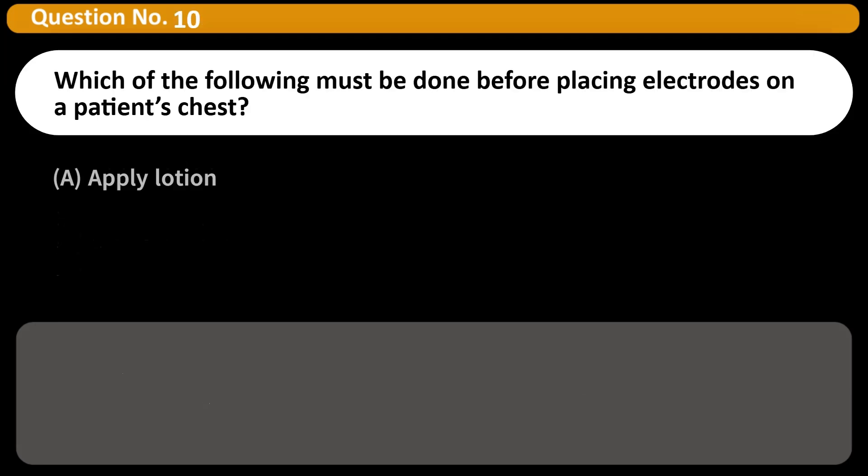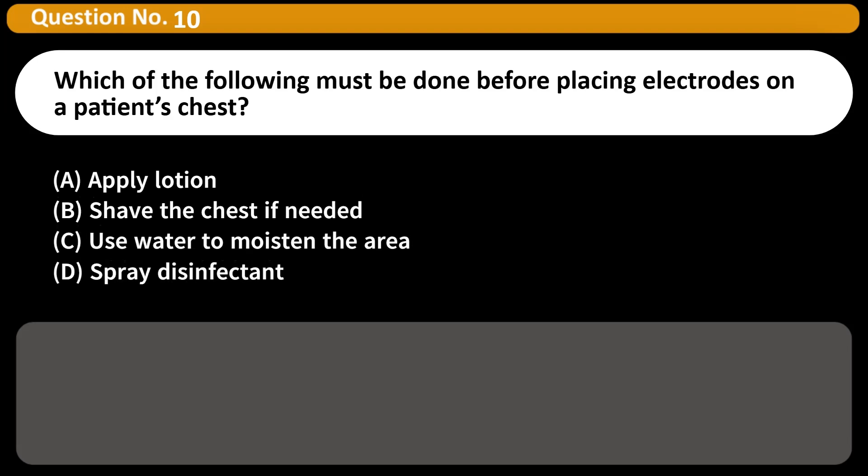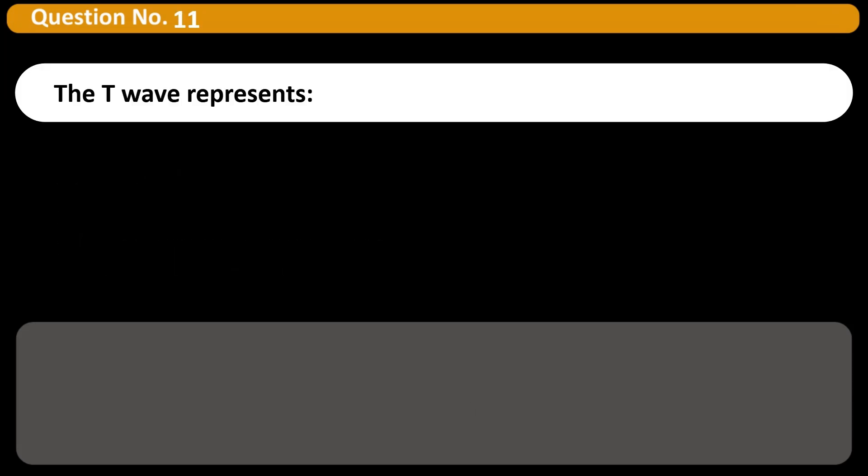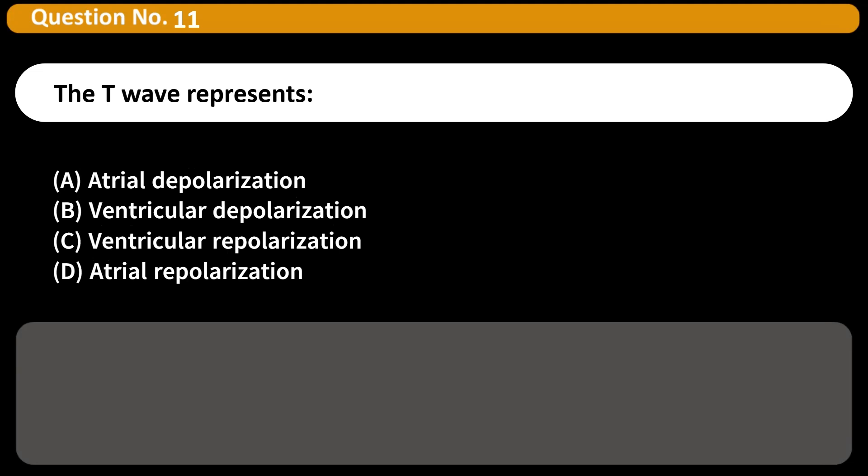Which of the following must be done before placing electrodes on a patient's chest? A. Apply lotion B. Shave the chest if needed C. Use water to moisten the area D. Spray disinfectant Answer B. Shaving the chest improves electric contact and signal quality.